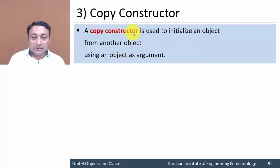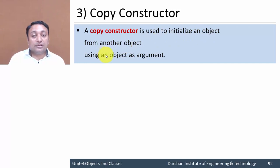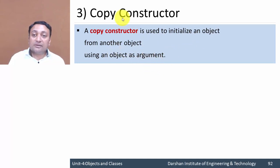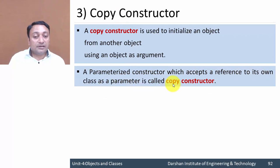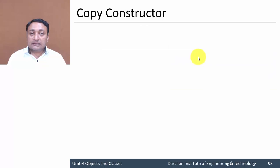Next is the copy constructor. It is used to initialize an object from another object, using an object as an argument in a parameterized constructor. If we pass an object as an argument, it will be converted into a copy constructor. A parameterized constructor which accepts a reference to its own class as a parameter is called a copy constructor.